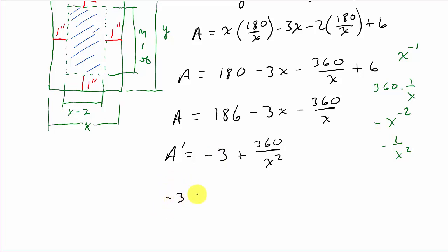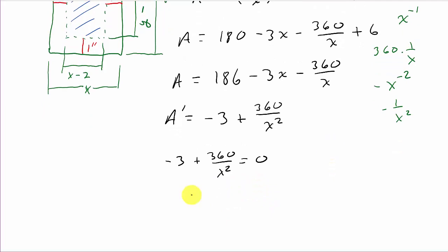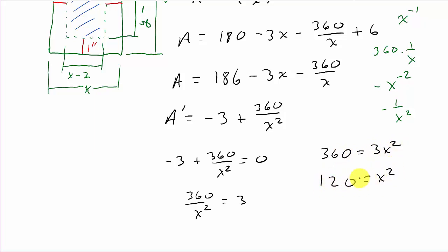So setting the derivative equal to zero: negative 3 plus 360 over x squared equals zero. That gives 360 over x squared equals 3, so 360 equals 3x squared, x squared equals 120, and x equals the square root of 120.